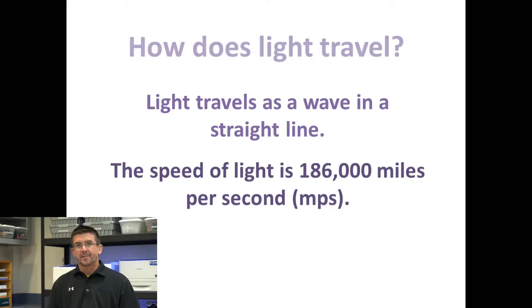Now we talked about light having the properties of a wave, but light travels as a wave in a straight line, and light travels very quickly, much faster than sound. It actually travels at a speed of 186,000 miles per second. That's not miles per hour, that's miles per second, so light travels incredibly fast.